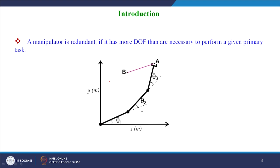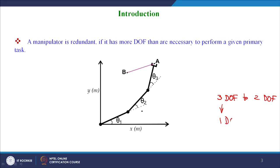Hence, there is one degree of freedom extra in the joint space, and hence this manipulator is a redundant manipulator because there is a mapping from three degrees of freedom to two degrees of freedom. We have one degree of freedom extra in the joint space which is acting as the redundant part.